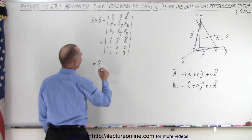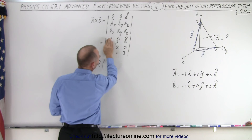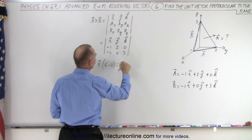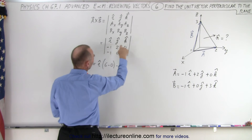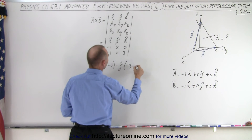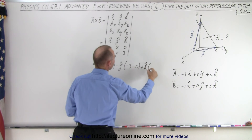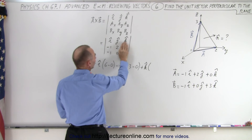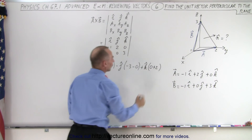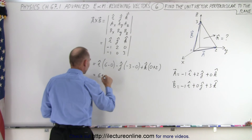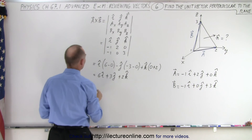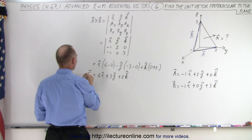This is equal to i times — hiding this column, I have those four elements left, so it's 2 times 3 minus 0 times 0, that would be 6 minus 0. Minus j — hiding this column, I'm left with minus 1 times 3 minus 0 times negative 1, so that's minus 3 minus 0. Plus k — hiding this column, I end up with 0 minus times negative 2, which is plus 2. So simplifying: 6 in the i direction. Minus times minus gives plus 3 in the j direction, and plus 2 in the k direction. Let's call that vector C, the cross product of A cross B.